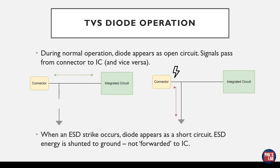Let's first look at the very basics of how a TVS diode operates in an ideal case. During normal operation, let's assume we have a connector and an integrated circuit talking to each other — for example, a microcontroller interfacing with a different PCB via a connector running at 3.3 volts with logic signals traveling along the trace. In this ideal case, the diode simply appears as an open circuit, invisible to both the connector and the integrated circuit. However, if a person causes an ESD strike, the diode should appear as a complete short circuit, shunting all ESD energy directly to ground and preventing any of this energy from reaching the integrated circuit.